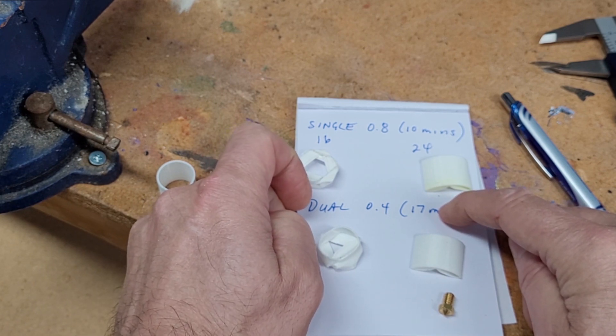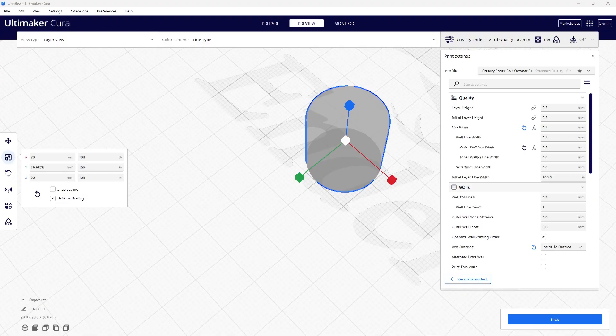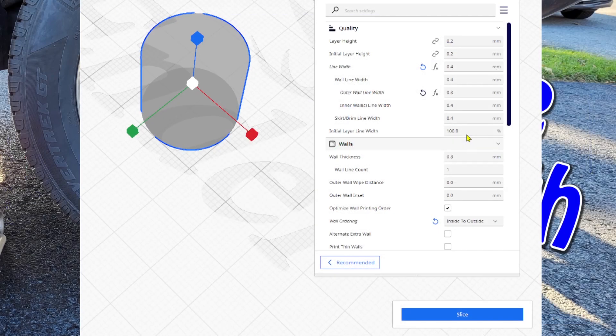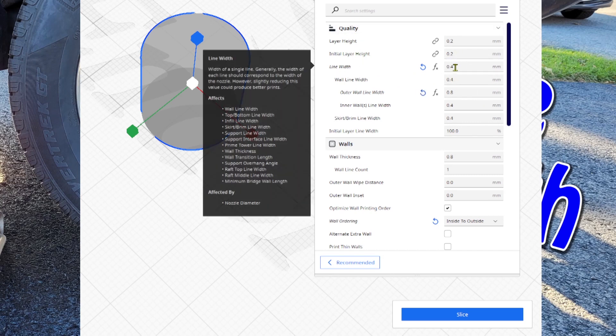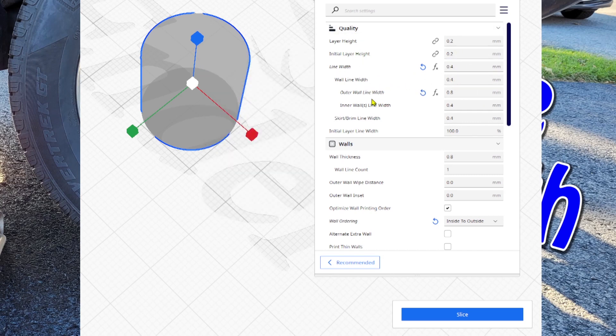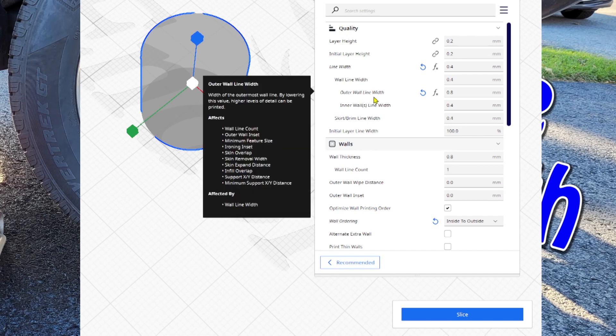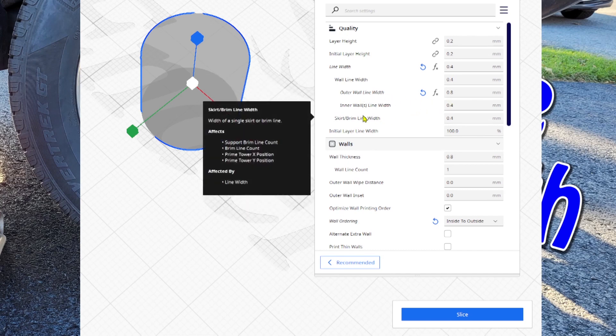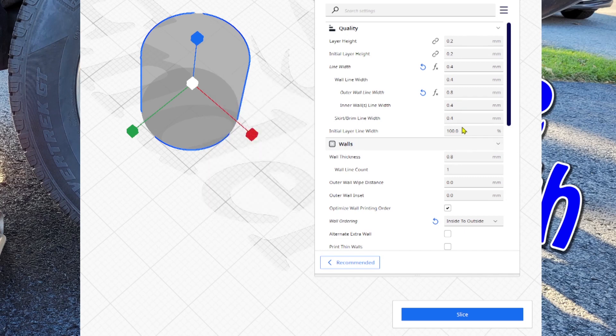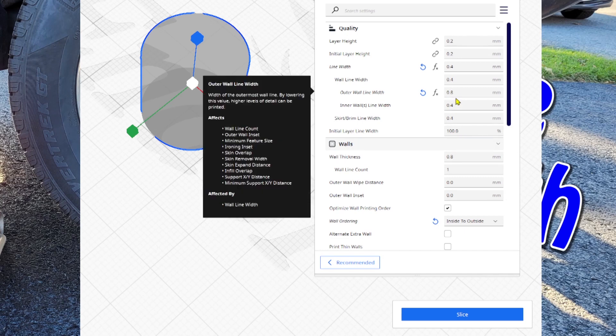So I had mentioned that I was going to share with you some customizations that you can try applying. If you come up here to the line width under quality in Cura, that's 0.4, but you can come down and you can say, oh you know what, I want the outer wall line width to be 0.8 and all inner walls to be 0.4. You're going to save some filament that way.